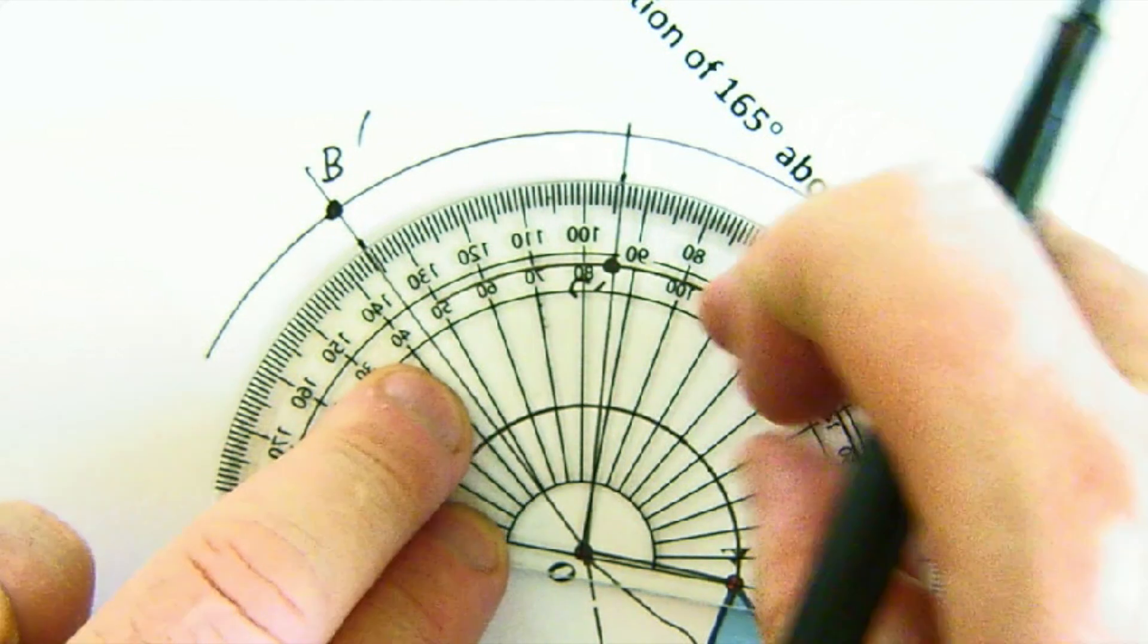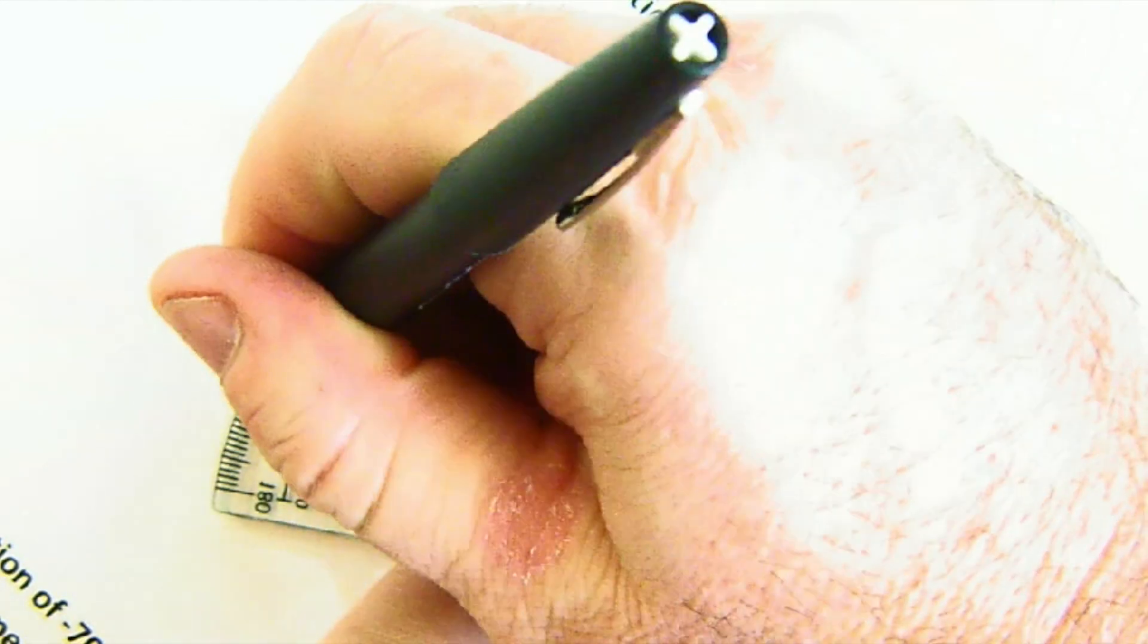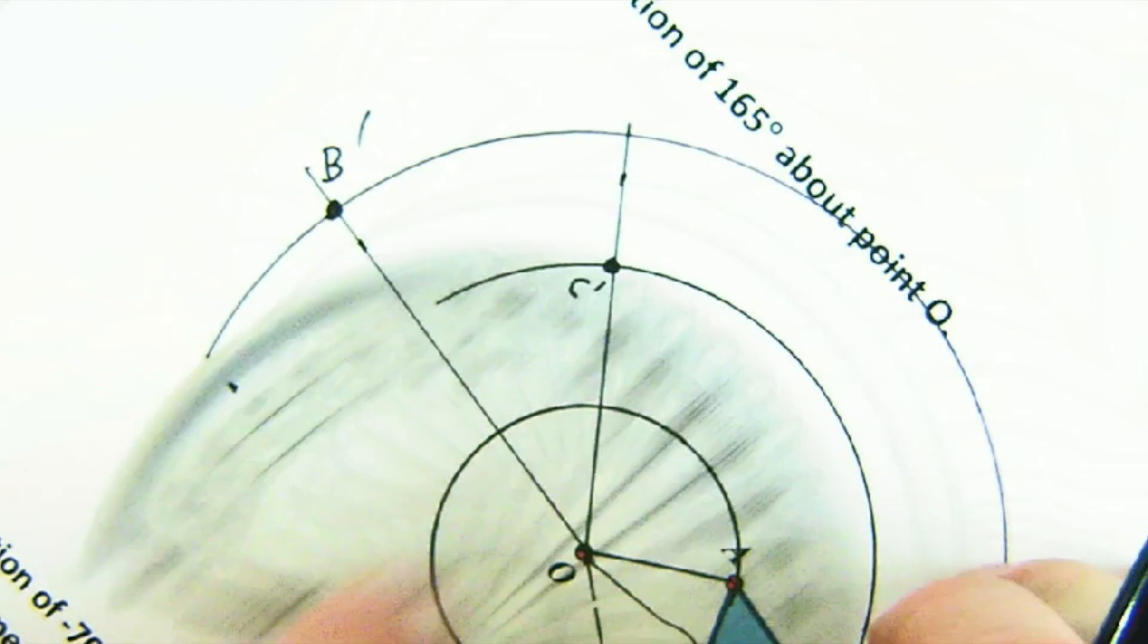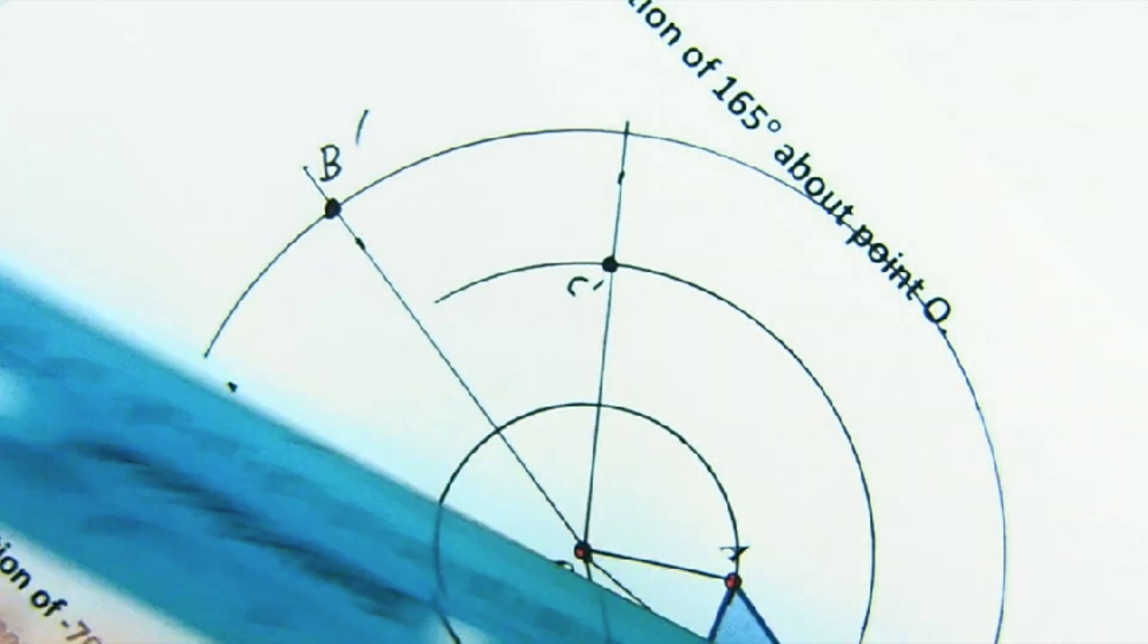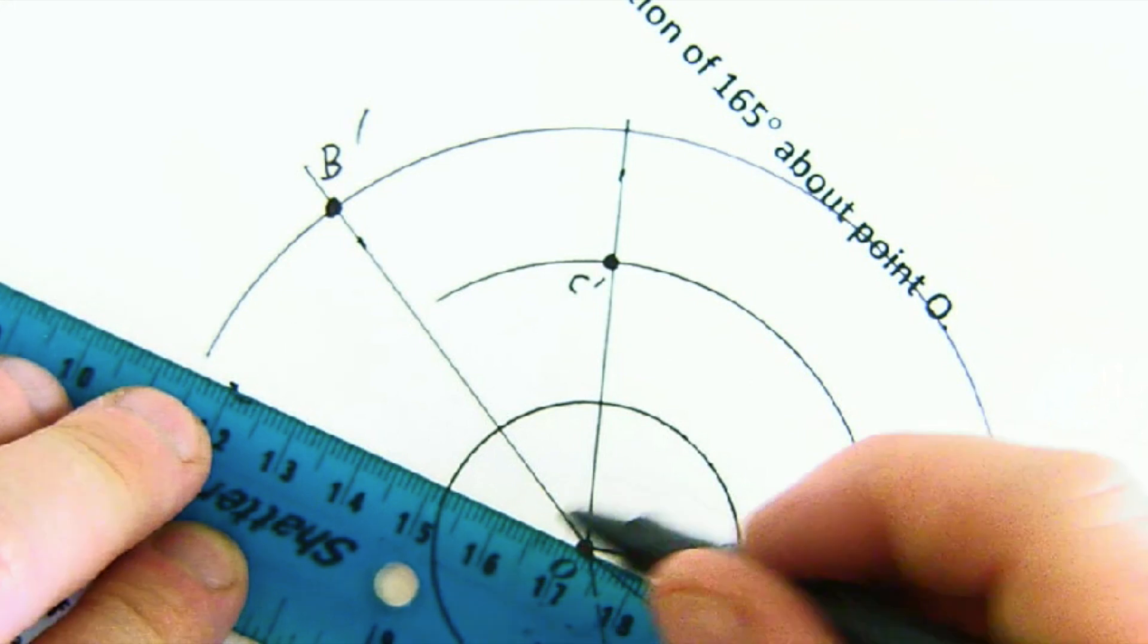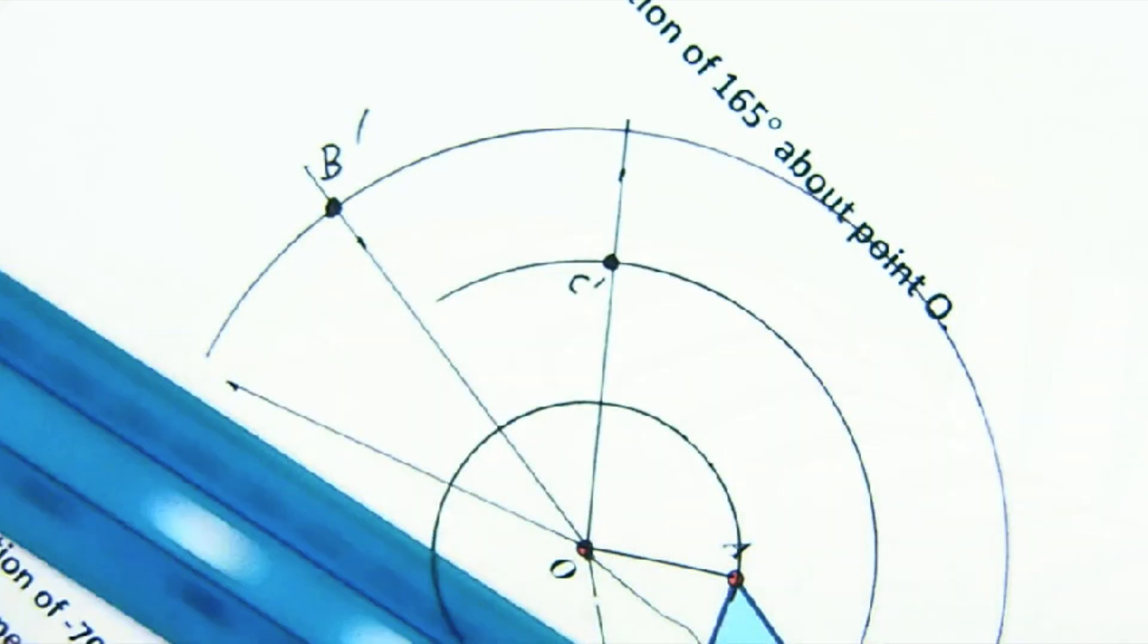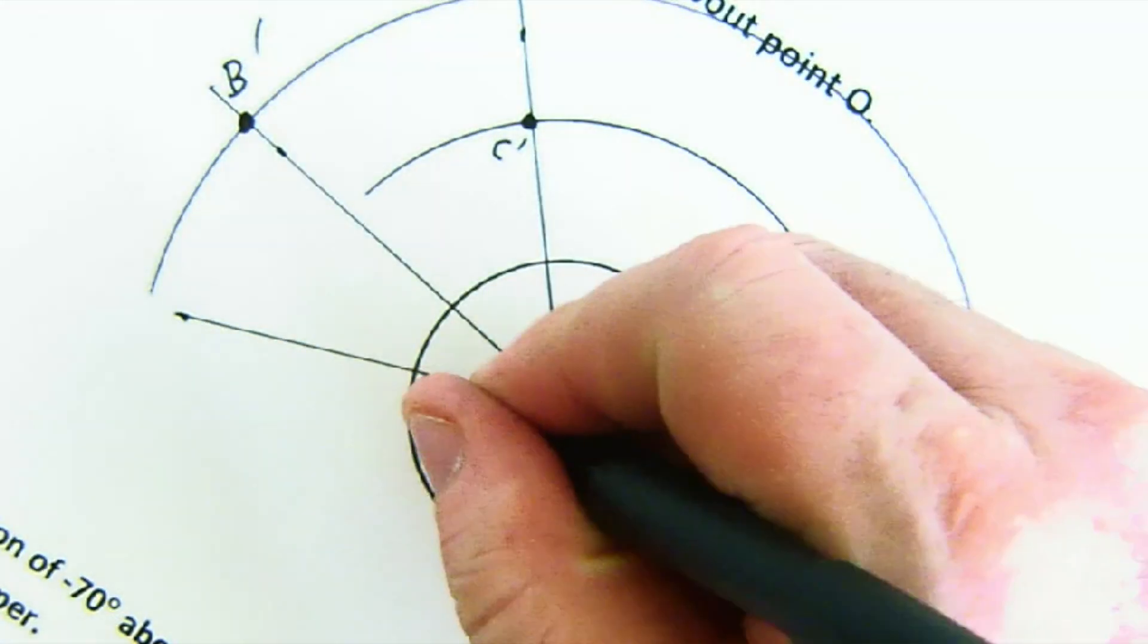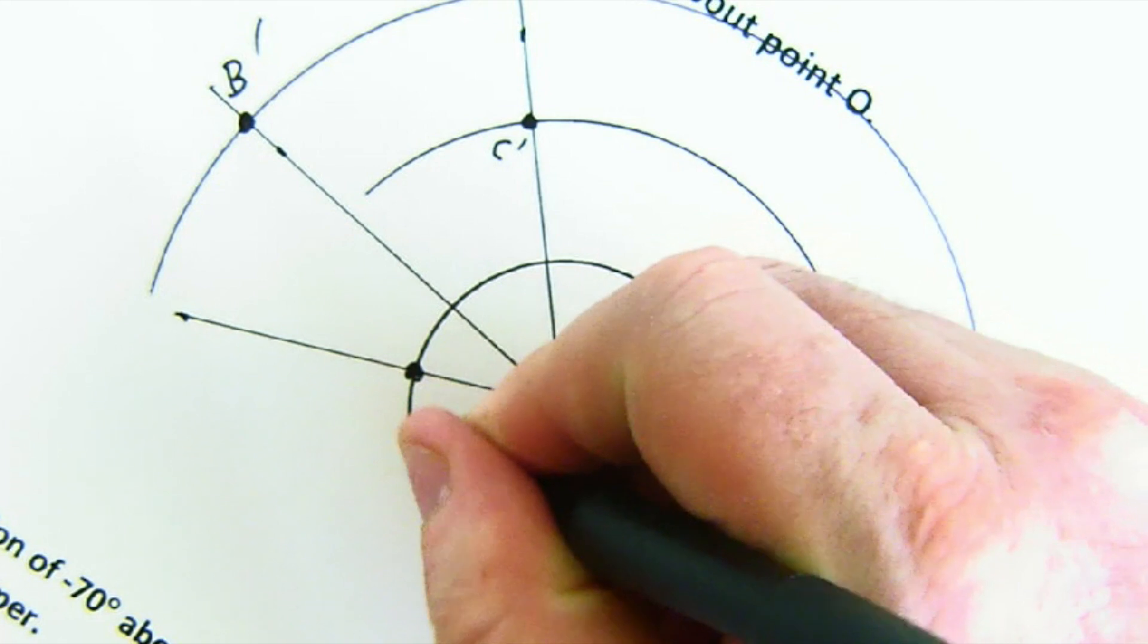So let's put it down. Count zero through 165, way over here somewhere. And then I'm going to draw my angle. And sure enough, it hits right here, A prime.